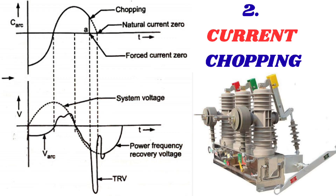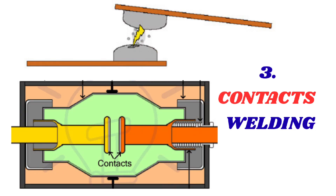Second, current chopping: VCBs can experience current chopping, which occurs when the circuit breaker interrupts the current before it reaches zero. This can cause voltage spikes which can be detrimental to equipment and potentially lead to insulation failure. Current chopping is more likely in applications with high fault currents or inductive loads. Third, contact welding: VCBs can experience contact welding, which occurs when the contacts fuse together due to high currents or arcing, potentially leading to equipment damage. To mitigate contact welding, VCBs are designed with specialized contact materials and geometries.